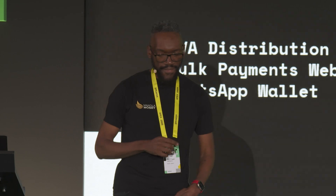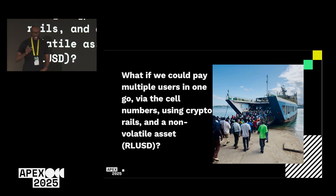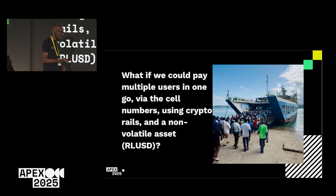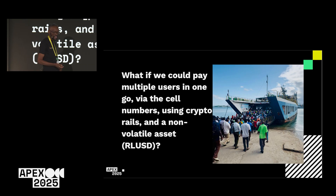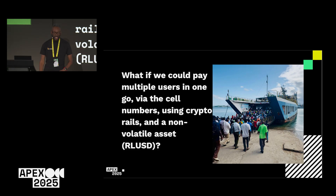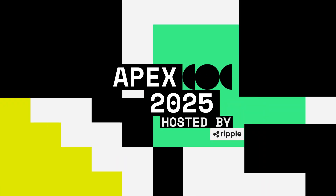That's the end of the demo. My final slide brings back the question I asked at the beginning: what if we could pay multiple users in one go via their cell numbers using crypto rails and RLUSD? I hope I've answered this and shown you how we can do this with RLUSD, our WhatsApp wallet, and our bulk payments interface. Thank you very much — I'll take any questions.